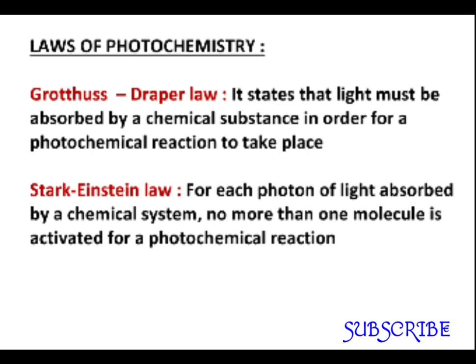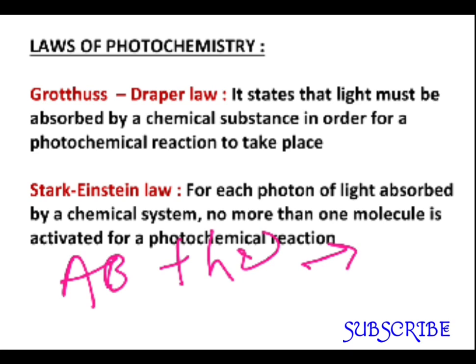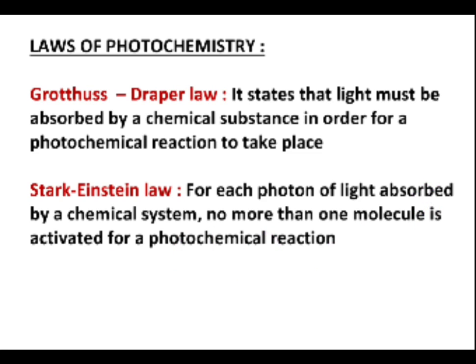That means one quantum is required per molecule. For example, a molecule AB interacts with one quantum of radiation, giving an activated molecule AB*. Only one molecule is activated by each quantum of radiation — that is what the Stark-Einstein law states. Overall, from both laws, we understand that light is the main requirement for photochemical reactions; it provides the activation energy, helping the system cross the energy barrier so the reaction can proceed in the forward direction.